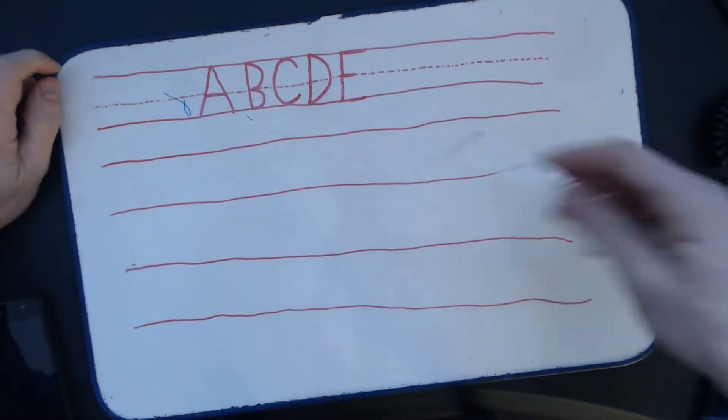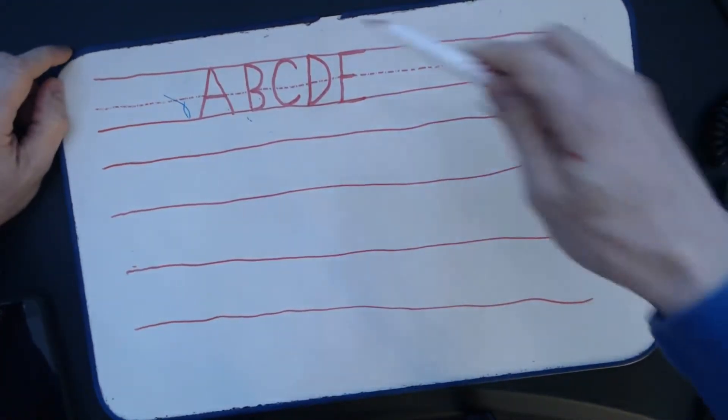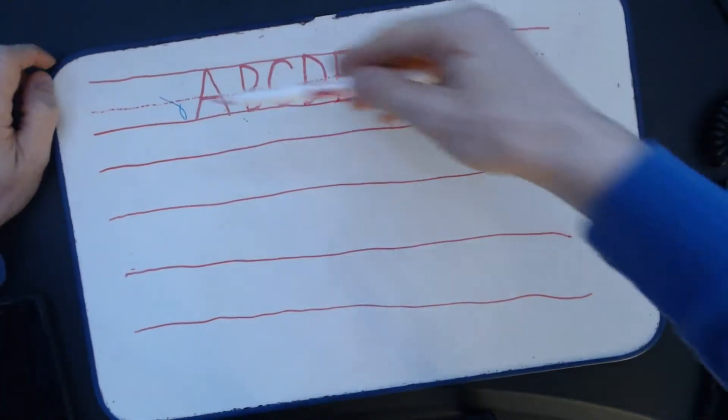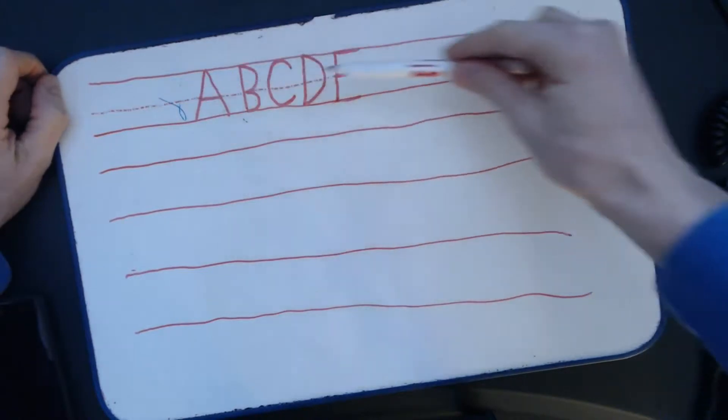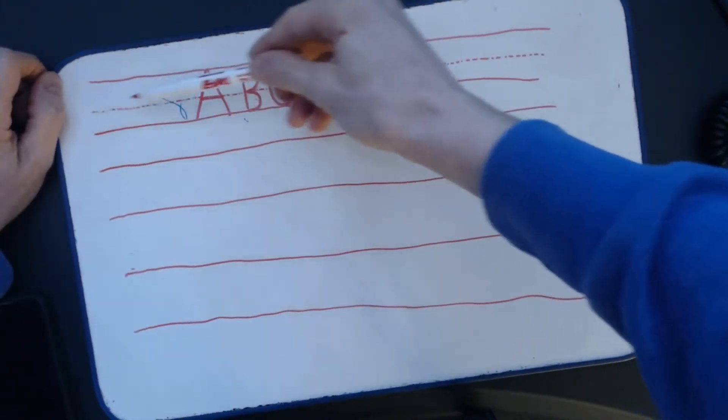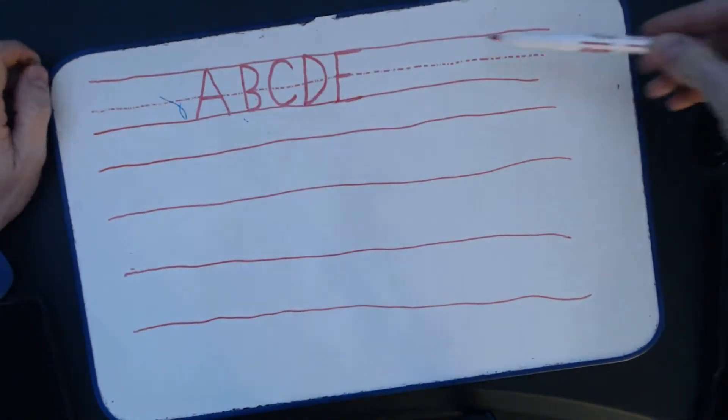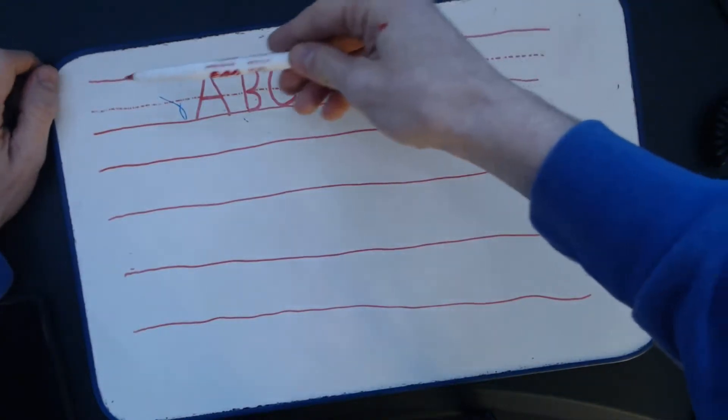So one of the ways we can think about changing up our letter forms when we're hand lettering is changing up the x-height. The x-height is generally, as we're taught in grade school when we're printing, just about midway through.